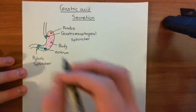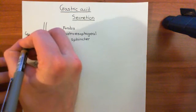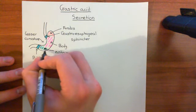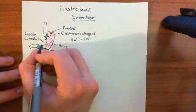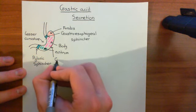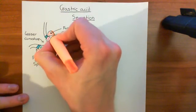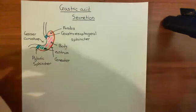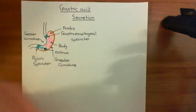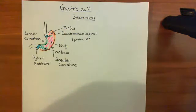A little more terminology: the curve in the wall of the stomach on one side is known as the lesser curvature of the stomach. On the other side, we have a much bigger curve, which is known as the greater curvature of the stomach.